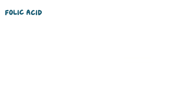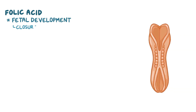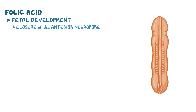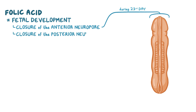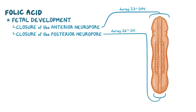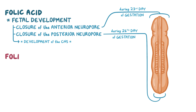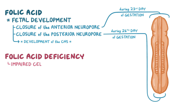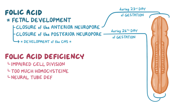Besides this, folic acid also plays a very important role during fetal development. Specifically, it's needed for the closure of the anterior neuropore of the neural tube during the 23rd day and the posterior neuropore during the 26th day of gestation. This is a crucial step in the development of the central nervous system. So in short, the consequences of folic acid deficiency are impaired cell division, too much homocysteine in the body, and neural tube defects in fetuses.